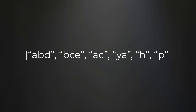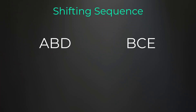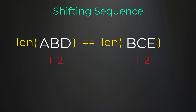So what is a shifting sequence? Let's look at these two strings: abd and bce. To get from character a to character b that only takes one step, since b is right after a. Then to get from b to d that takes two steps, so the shifting sequence for abd is one, two. For string bce, to get from b to c that's one step, and from c to e that's two steps, so the shifting sequence is also one, two. Both strings have the same shifting sequence.